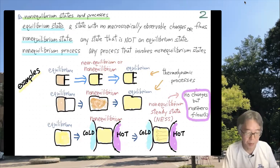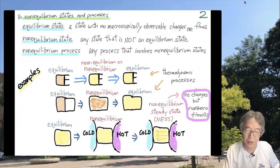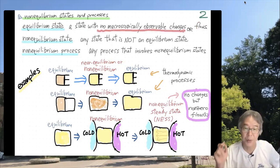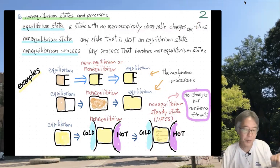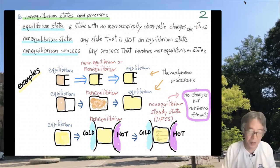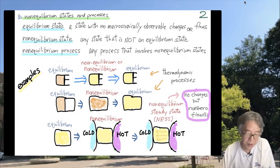What is a non-equilibrium state? First, an equilibrium state is a state with no macroscopically observable changes and no macroscopically observable flows. In some cases you have a system with no observable changes but non-zero flow — we will see an example shortly. A non-equilibrium state is any state that is not an equilibrium state, so there are many different types. A non-equilibrium process is any process that involves non-equilibrium states.